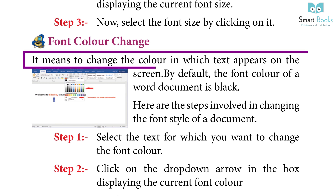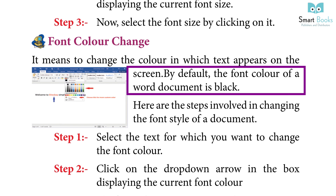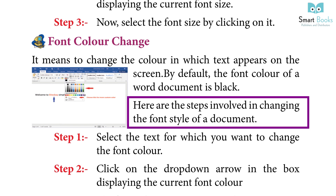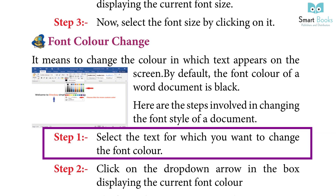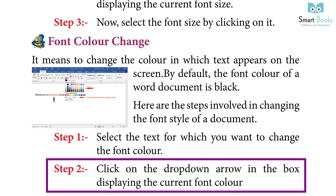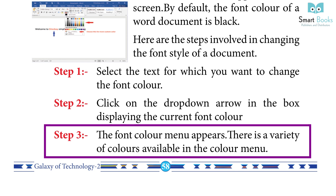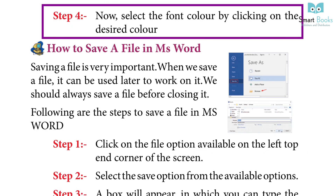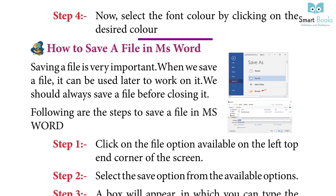Font Color Change means changing the color in which text appears on the screen. By default, the font color of a Word document is black. Steps: Step 1 — select the text. Step 2 — click on the drop-down arrow in the box displaying the current font color. Step 3 — the font color menu appears with a variety of colors. Step 4 — select the font color by clicking on the desired color.